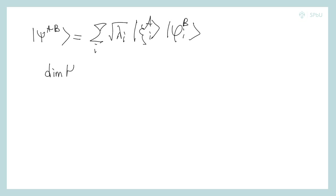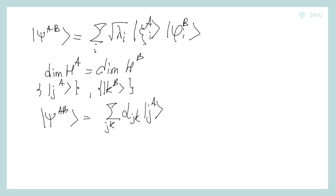So, dim H A equals dim H B. Let G A and K B be basis for systems A and B respectively. Then we have Psi AB equals sum over G K alpha G K G A K B, where alpha G K are the coefficients alpha G K equals G A K B and ket Psi AB.